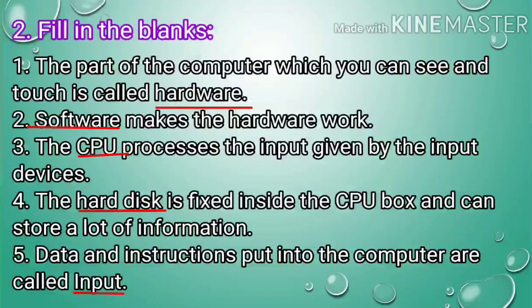Next, fill in the blanks. Number 1: The part of the computer which you can see and touch is called hardware. Number 2: Software makes the hardware work. Number 3: The CPU processes the input given by the input devices. Number 4: The hard disk is fixed inside the CPU box and can store a lot of information.